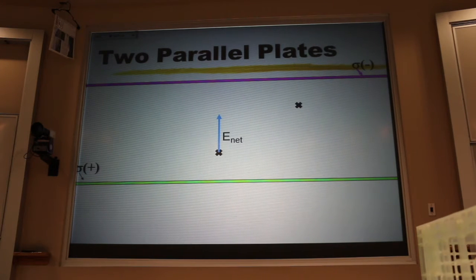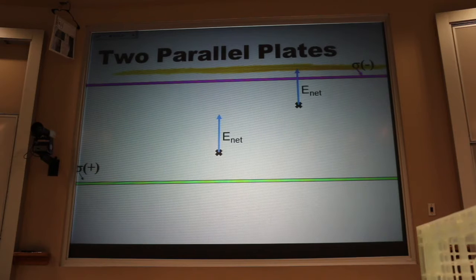Now it doesn't matter whether I do it at this location or that location. I get the same size contribution from the positive sheet and the negative sheet. And everywhere between those two sheets, I get the same total electric field.